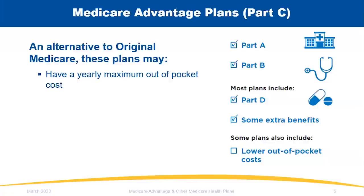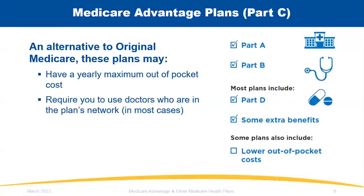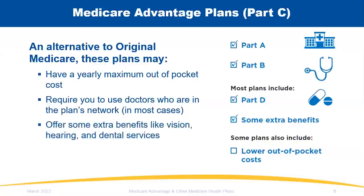Medicare Advantage plans are another option for how you would like to get your health care coverage through the Medicare program. Although you are still part of Medicare, a Medicare Advantage plan is a managed care option. In a Medicare Advantage plan, you have both Medicare Part A (hospital-based insurance) and Medicare Part B (medical insurance). Some plans even include prescription drug coverage and extra benefits. They do have a yearly maximum out-of-pocket cost, and you may have to go through a network of certain doctors and hospitals.